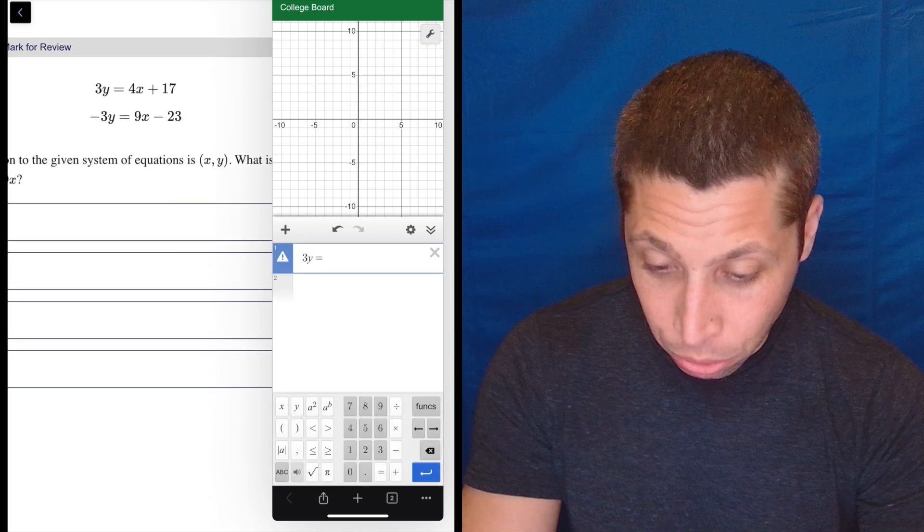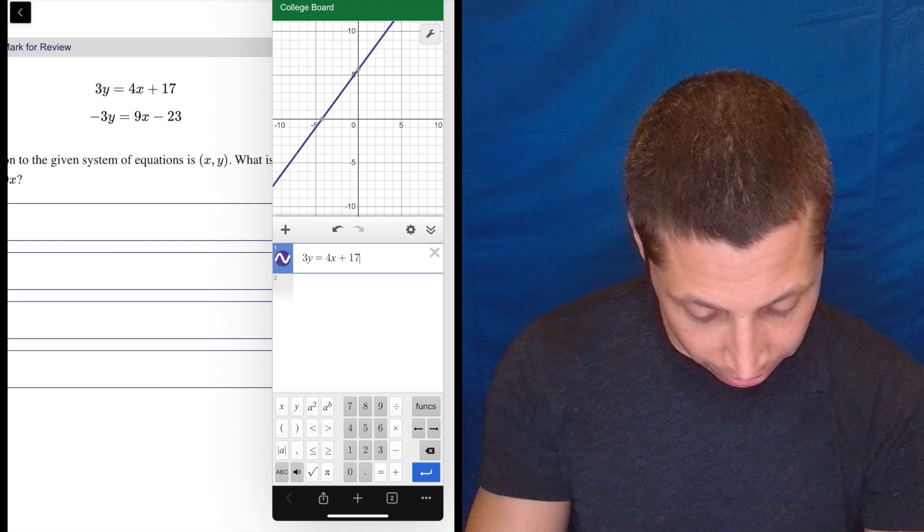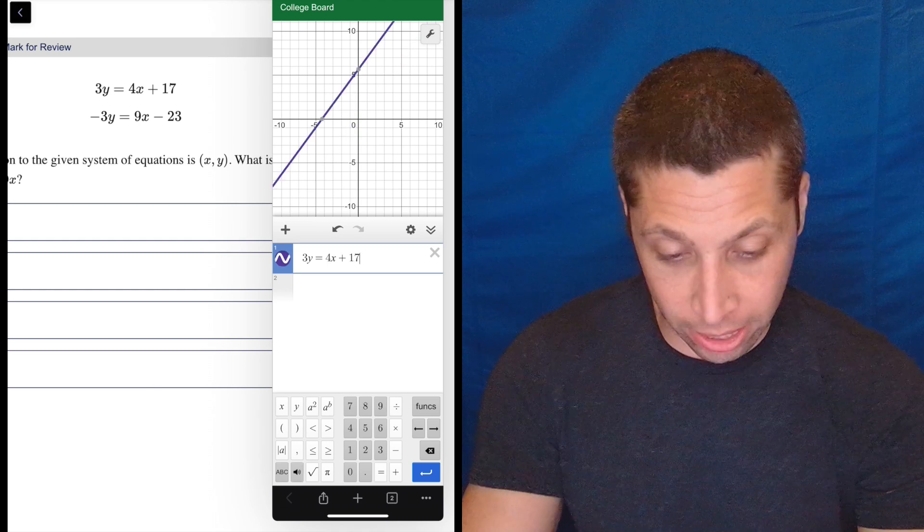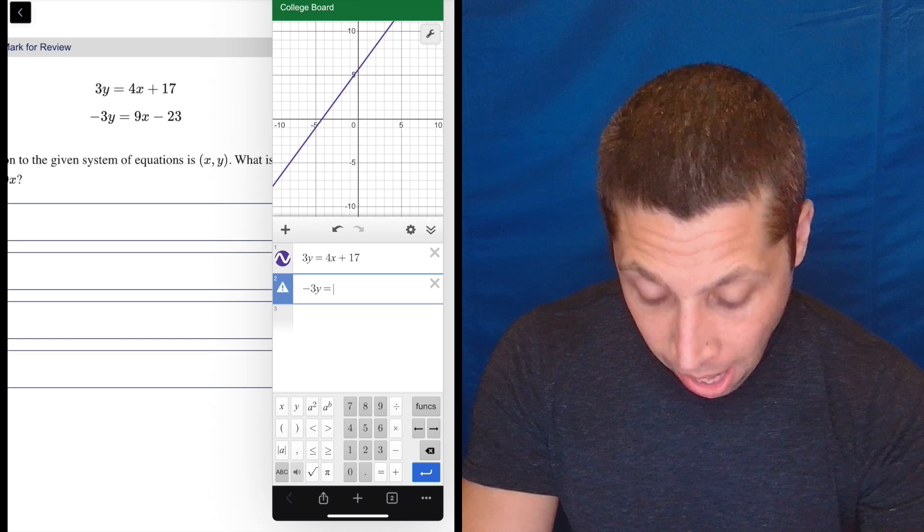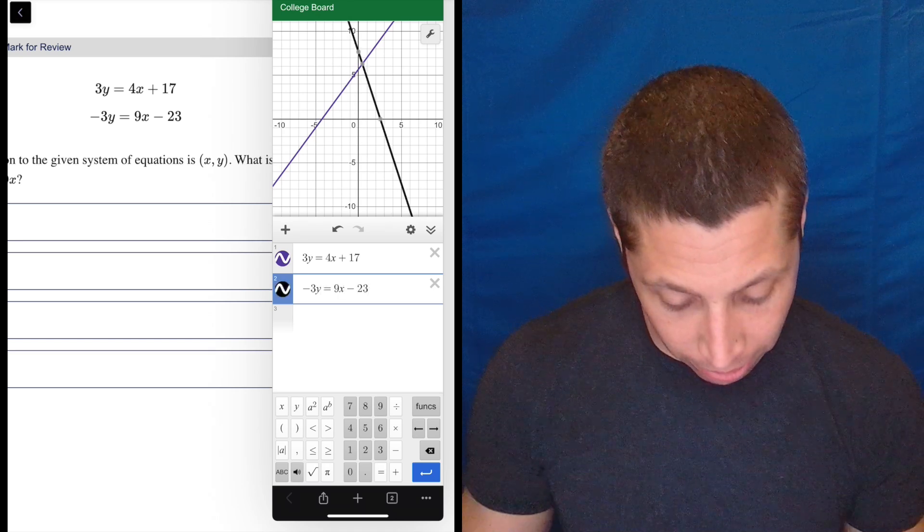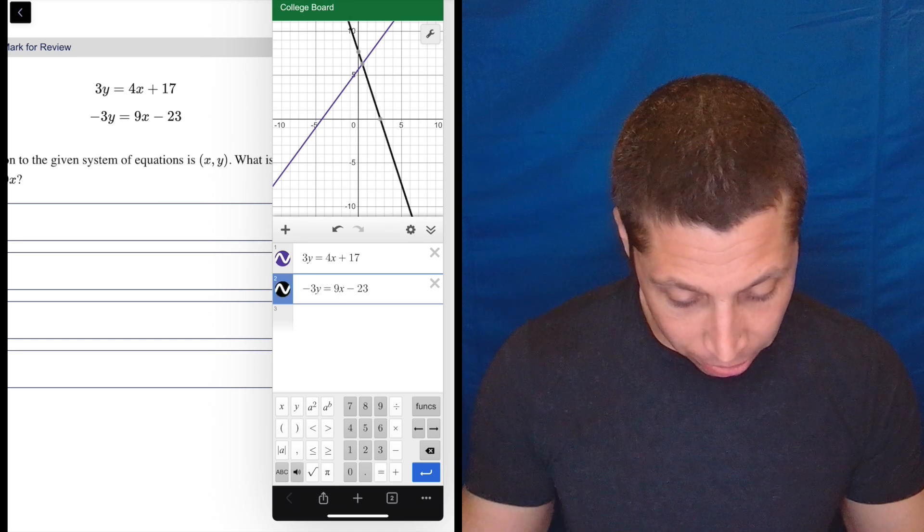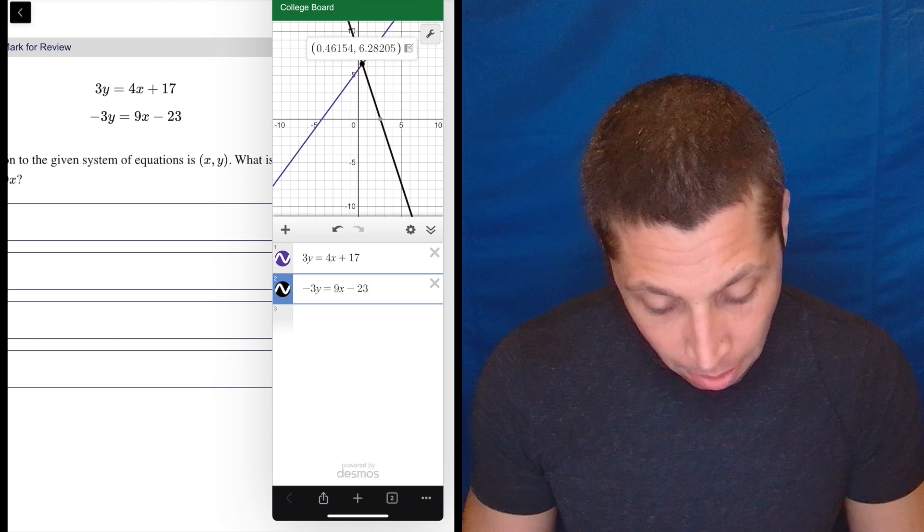So 3y is equal to 4x plus 17. 3y equals 4x plus 17. Looks good. Next line. Negative 3y equals 9x minus 23. Negative 3y equals 9x minus 23. There it is right there.